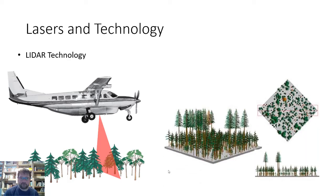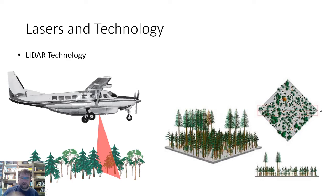With LiDAR, lasers are shot down from the underbelly of the plane as it flies over. Those lasers bounce off things and come back up to be received. If the laser bounces off the ground, it means it went all the way through and there's no canopy there. If it bounces off at midway down the tree, it tells the distance — basically giving you the height of the trees. It tells you not only the height of the trees but how densely packed they are in a given region. You run your plane on a transect with a known region, known height, and known distance.